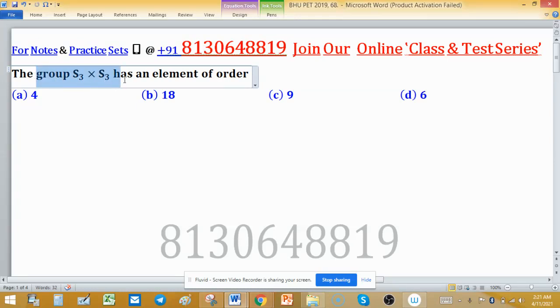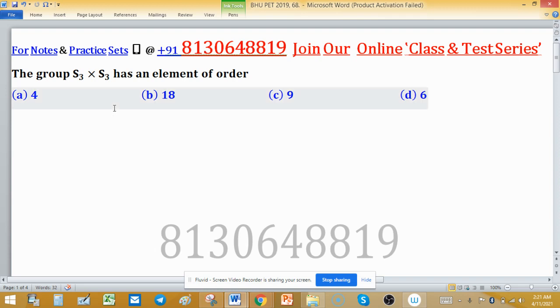The group S₃ cross S₃ has an element of order, means possible order of an element which is in S₃ cross S₃. What?